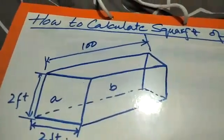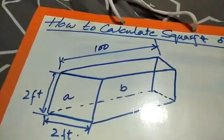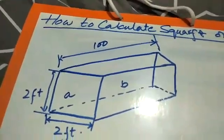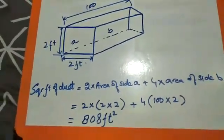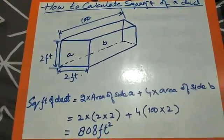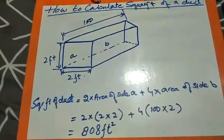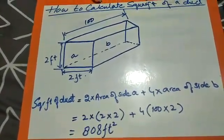Side B is the side portion of the duct—its back portion, top portion, and bottom portion will be of equal size. So for calculating the square feet of duct, it will be equal to 2 multiplied by area of side A, because the front side and back side will have the same area, so we multiply by 2.